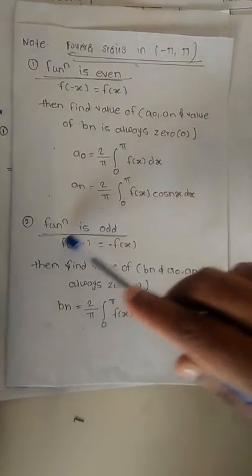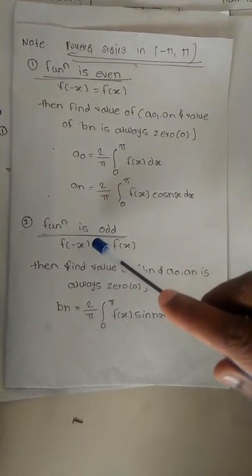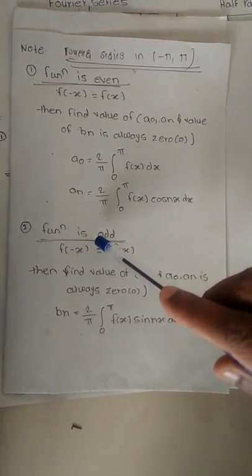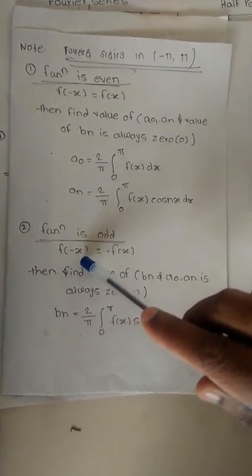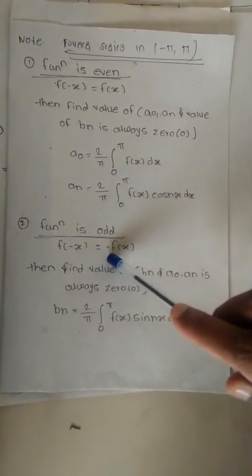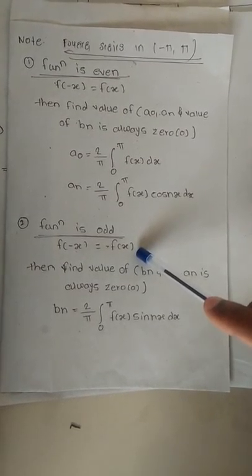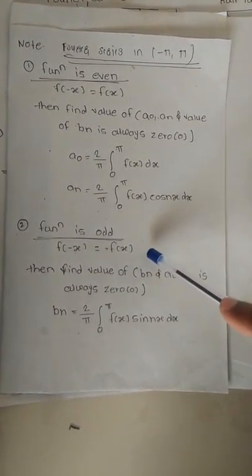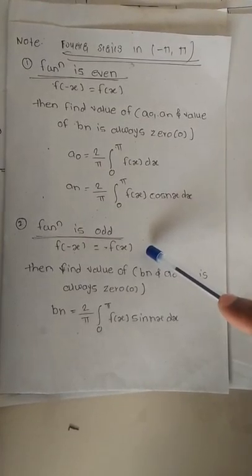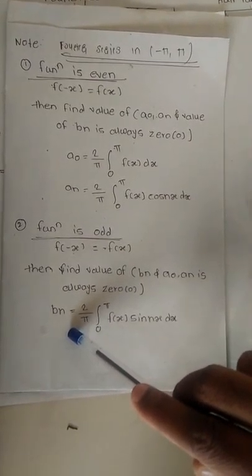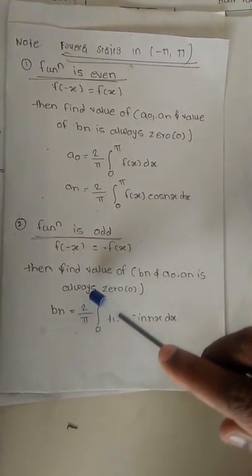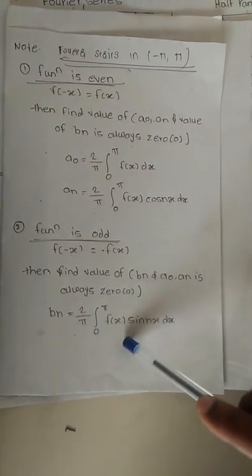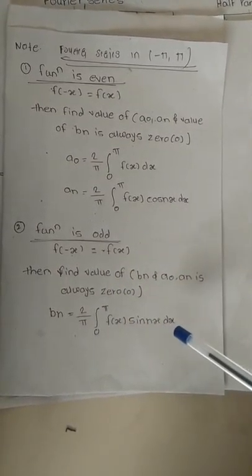Next, if the function is odd — how to identify that a function is odd? Put minus x in place of x. Then if we get f of minus x equal to minus f of x, then that function is said to be an odd function. If any function is an odd function, we only need to find the value of bₙ. The value of bₙ is 2 by pi, integral 0 to pi of f(x) sin(nx) dx.